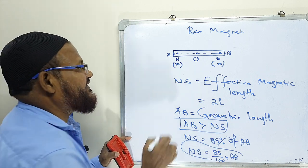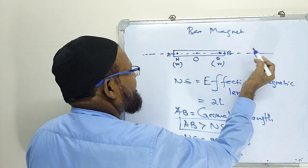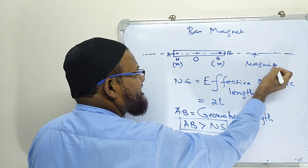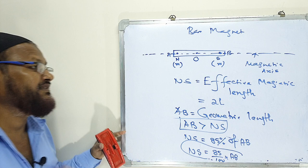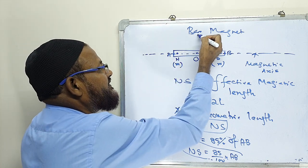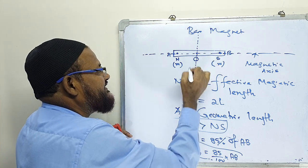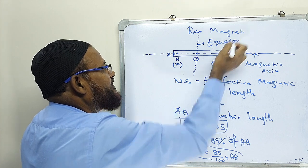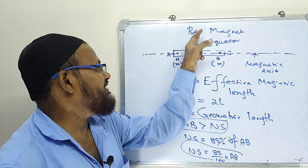Another property: the line NS is called the magnetic axis. Another line through the center perpendicular to it is called the magnetic equator. So the bar magnet has a magnetic axis and a magnetic equator.